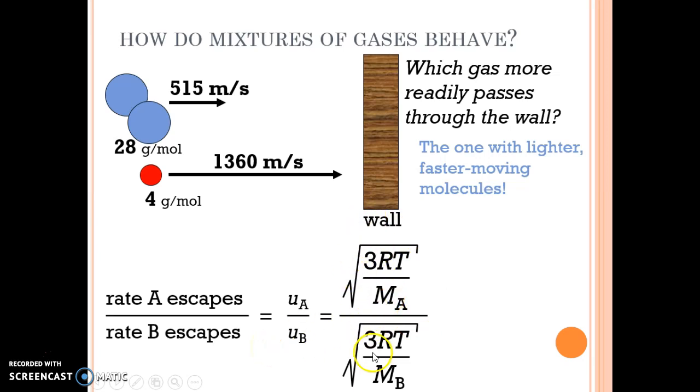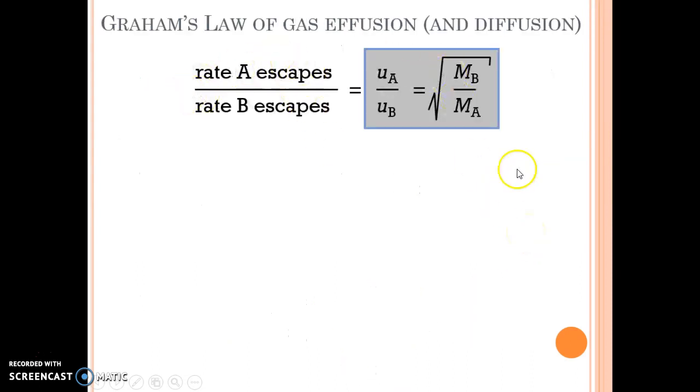At this point, if you have two gases under the same conditions, R cancels out, T cancels out, even the 3 cancels out. You're left with one over divided by one over, which means you can put the mass of B on top. So the root mean square speed ratio equals the square root of the inverse molar masses, which equals the rate of escape. This is the derivation you've got to work with.